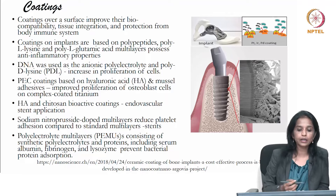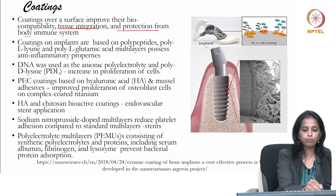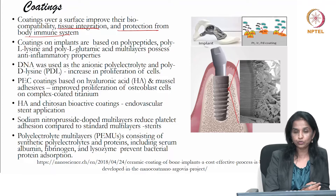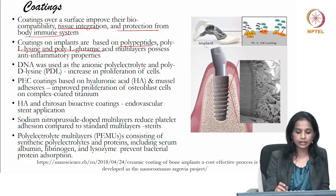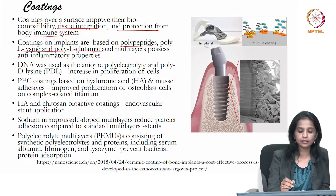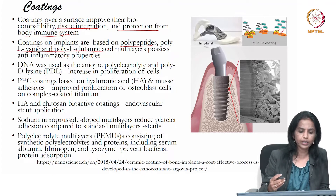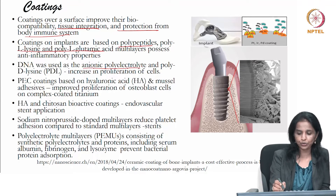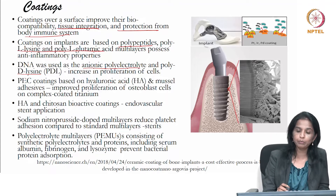Coatings are usually applied to improve biocompatibility, improve tissue integration, and provide protection from the body's immune system. Commonly used coating systems include polypeptides, poly-L-lysine, and poly-L-glutamic acid — these are protein-derived materials that provide anti-inflammatory properties. DNA is also used as an anionic polyelectrolyte, and poly-D-lysine is used to increase cell proliferation in implant-based applications.